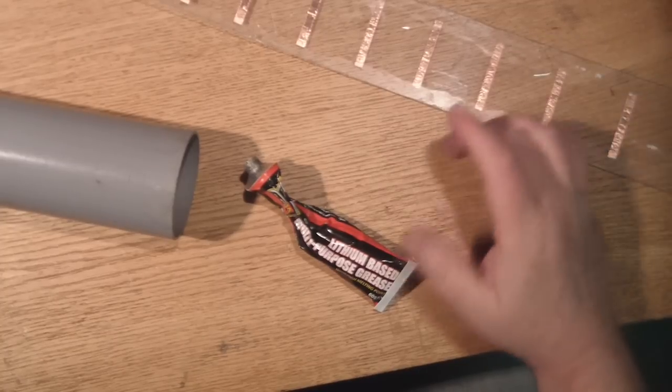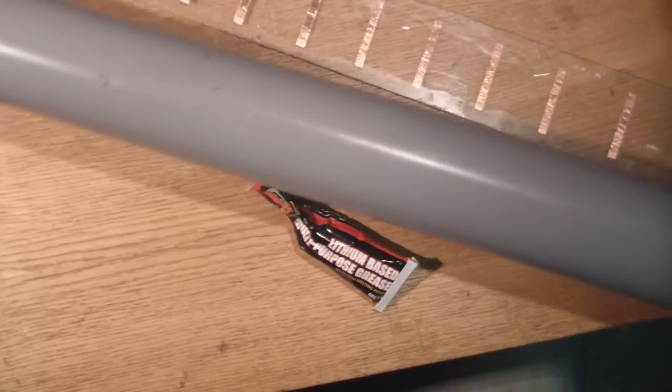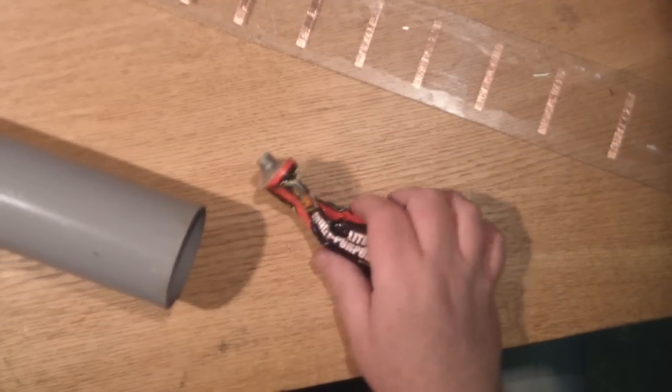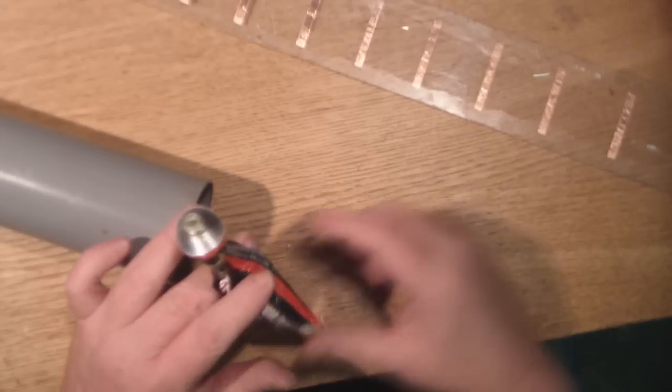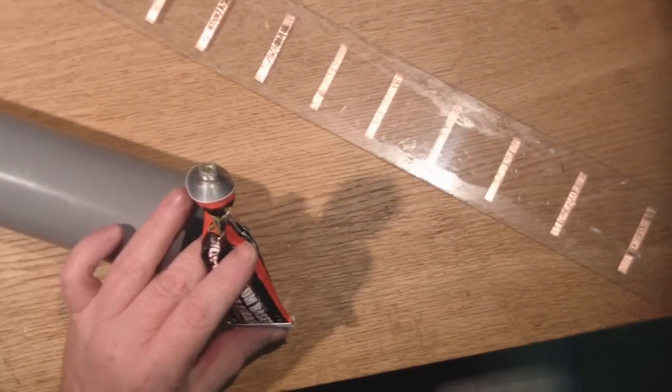So we're now ready to put the Yagi inside our drain pipe and I've just cut this drain pipe just a little bit longer than the Perspex. Also to help it on its way, I've just put a little bit of silicone grease down the edges of the Perspex.